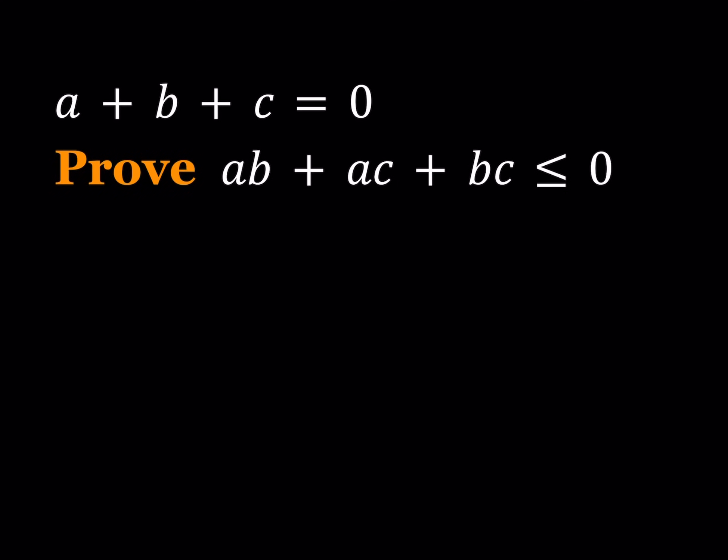Hello everyone. In this video we're going to be proving an inequality in two ways. We have a plus b plus c is equal to zero and we are going to prove that ab plus ac plus bc is less than or equal to zero. I'll be presenting two methods, so let's start with the first one.